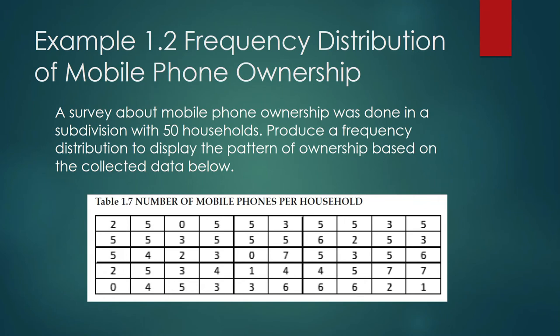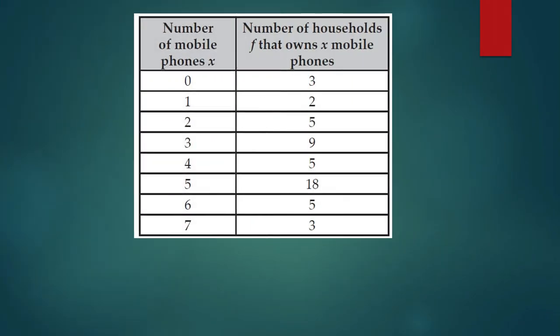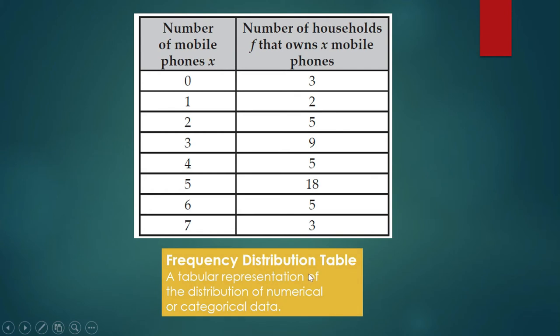And one of those helpful processes to see the pattern in consumer behavior is to produce a frequency distribution table. So a frequency distribution table is a tabular representation of the distribution of numerical or categorical data. In the first column, what we have here is the number of mobile phones owned by a household. And in the second column is the number of households that owns X mobile phones. So now we can see some pattern here. This one is revealing some helpful information now.